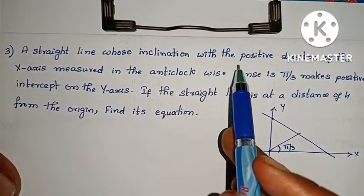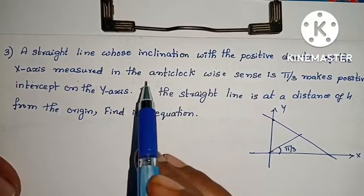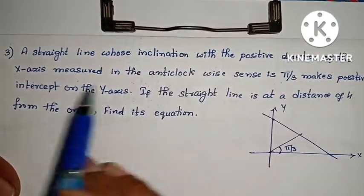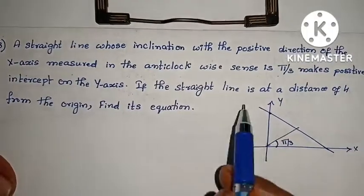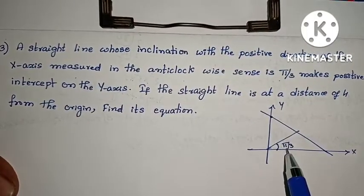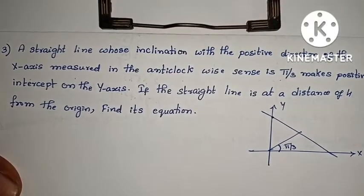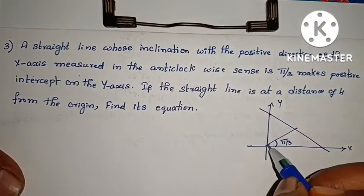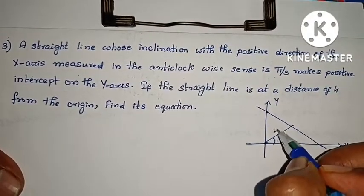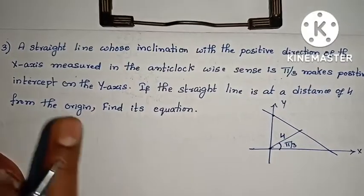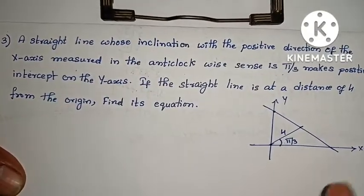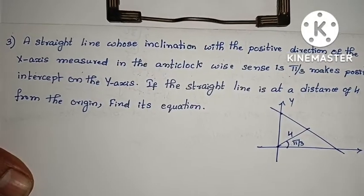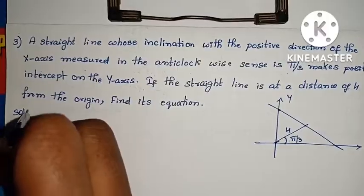Next problem: a straight line whose inclination with the positive direction of the x-axis, measured in the anti-clockwise sense, is π/3. It makes a positive intercept on the y-axis. The straight line is at a distance of 4 from the origin. Find its equation. We will use the formula: distance from origin p = |c| / √(a² + b²).